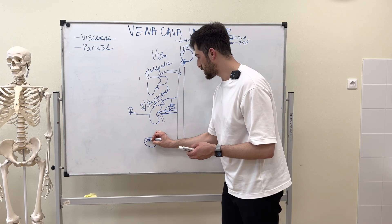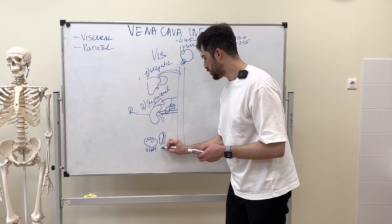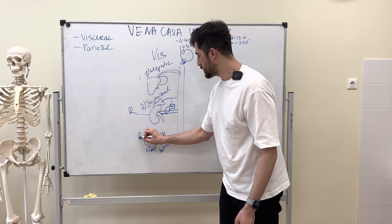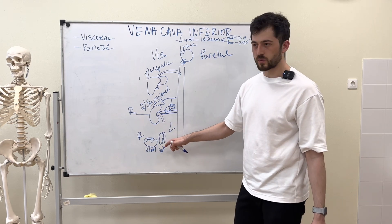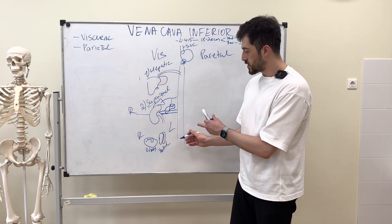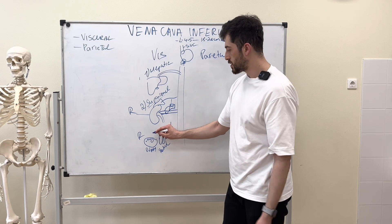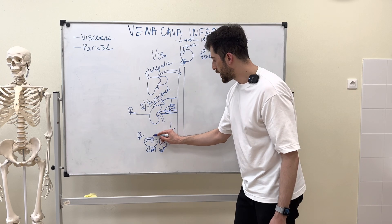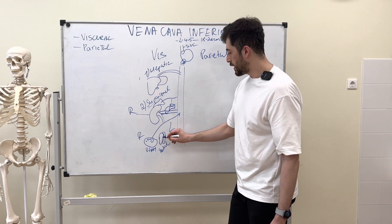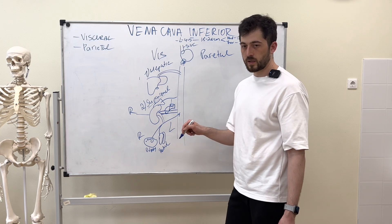We have both ovarian and testicular veins — these are paired organs, just like the suprarenals and renals. On the right side, the testicular or ovarian vein drains directly into the inferior vena cava at an acute angle.